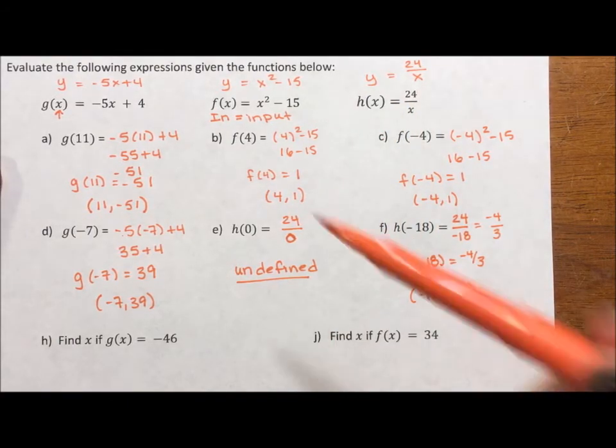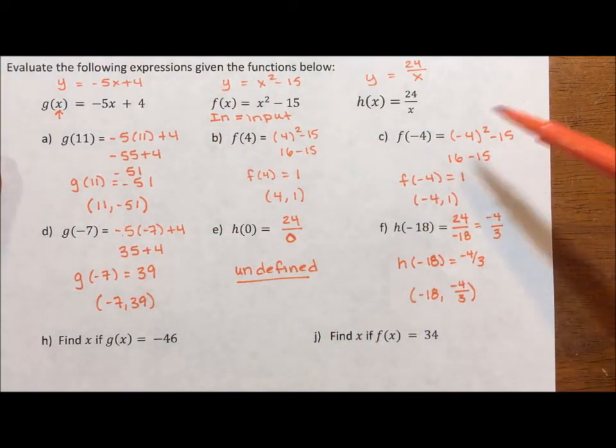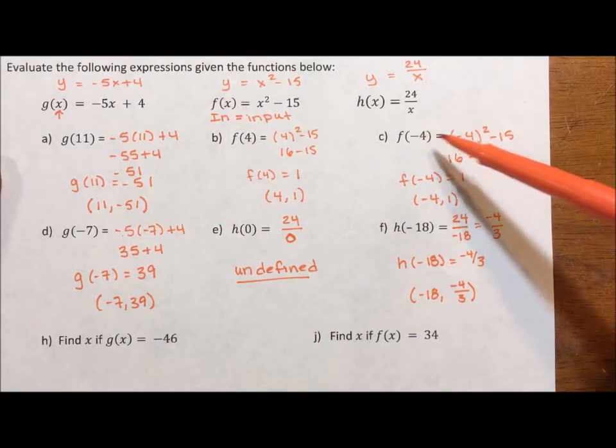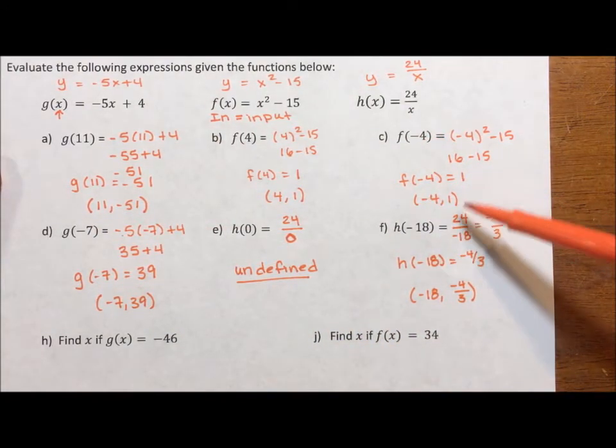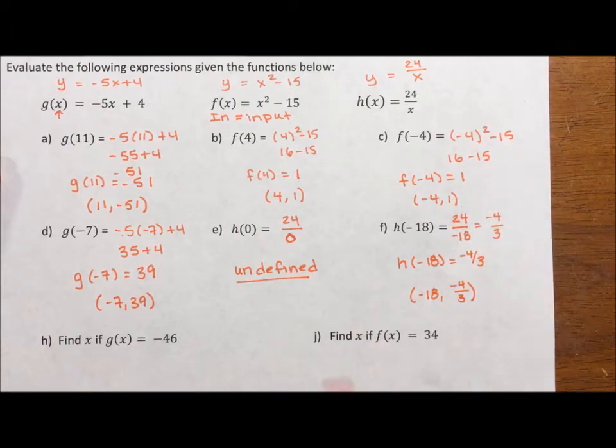In all of these first six examples, you are given the input and you have to calculate the output for our ordered pair. In the last two, it's the opposite.